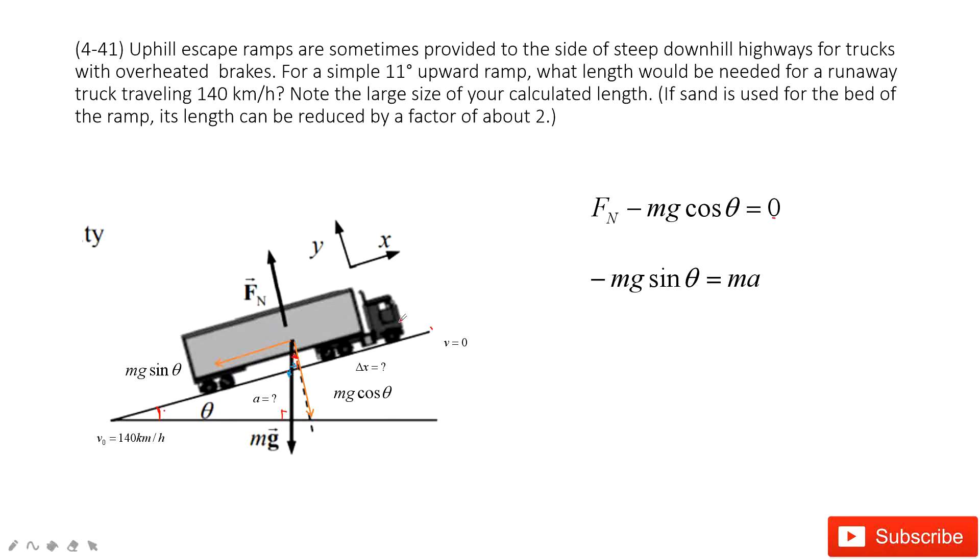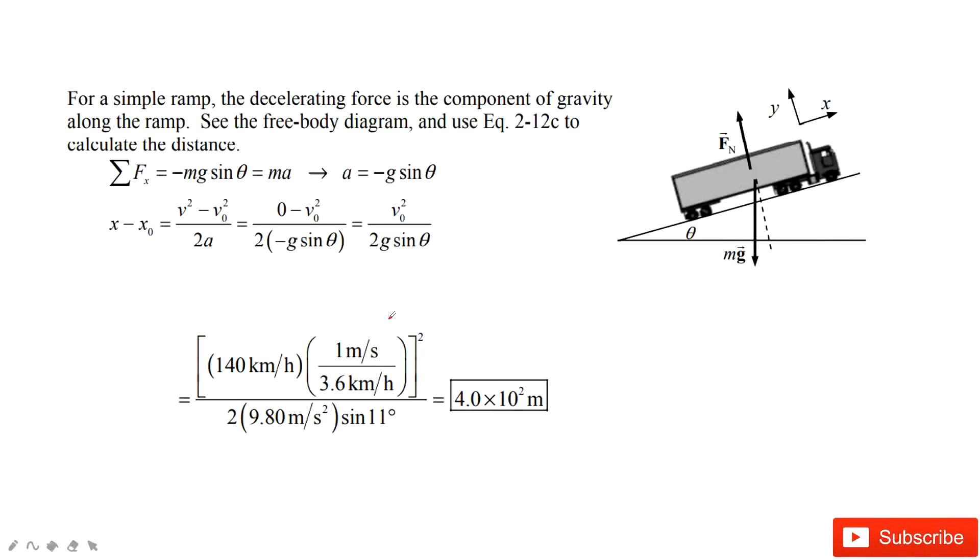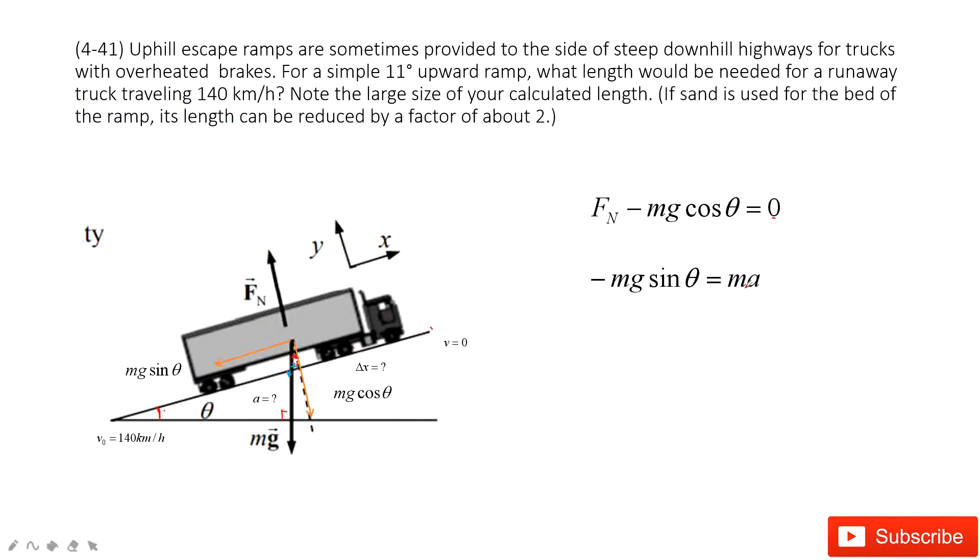Now we can find acceleration along the x-direction. This acceleration is a equals negative g sin θ. With the acceleration, it is super easy for us to find displacement, because we know initial velocity, final velocity, and acceleration.